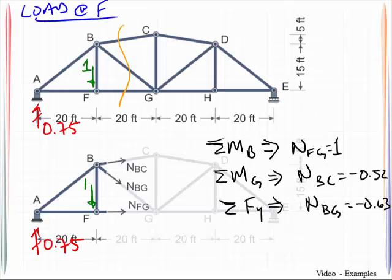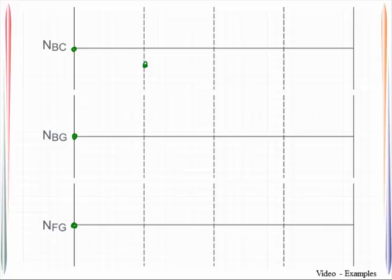We then put it at F, and the response quantities are 1, negative 0.52, negative 0.63. So let's go get those. Negative 0.52, negative 0.63, and 1.